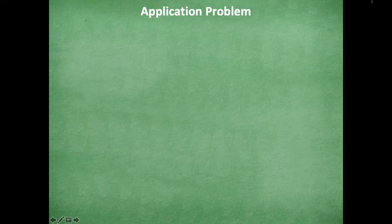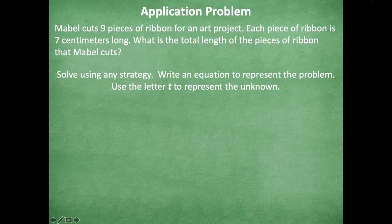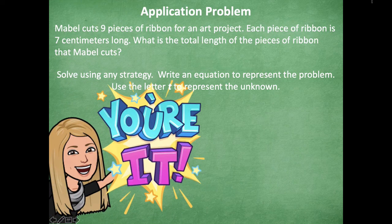First, we're going to start with our application problem. It says: Mabel cuts nine pieces of ribbon for an art project. Each piece of ribbon is seven centimeters long. What is the total length of the pieces of ribbon that Mabel cuts? Solve using any strategy and write an equation to represent the problem, using the letter T to represent the unknown. Go ahead and pause the video, solve the application problem, and then click play when you're ready to go over it together.